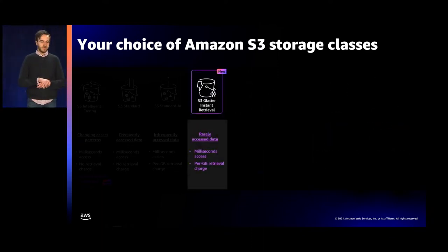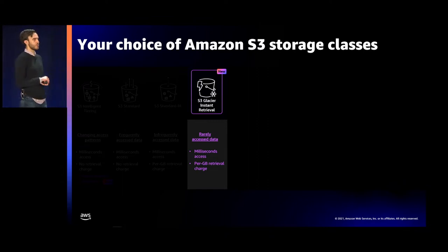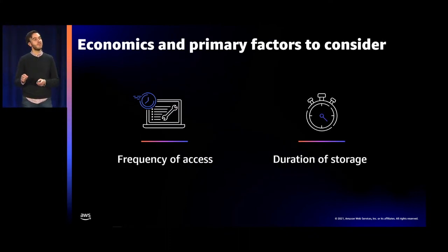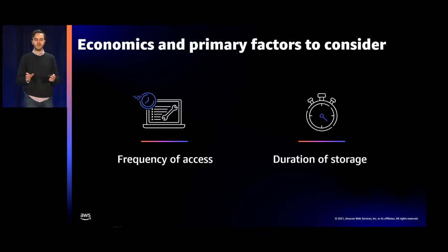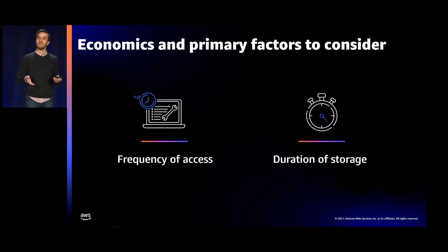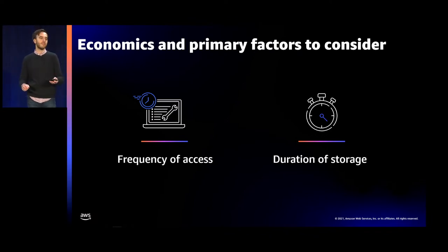Now I want to dive deeper into S3 Glacier Instant Retrieval — the economics, when to use it, and how to use it. In evaluating when you should use S3 Glacier Instant Retrieval, there are two factors to consider: frequency of access and duration of storage. S3 Glacier Instant Retrieval is the ideal storage class if you access your data once per quarter. Although the storage price is lower than S3 Standard Infrequent Access, the cost to access your data is moderately higher, so there's a break-even point — if data is accessed too frequently, it makes sense to keep it in S3 Standard Infrequent Access or S3 Standard.